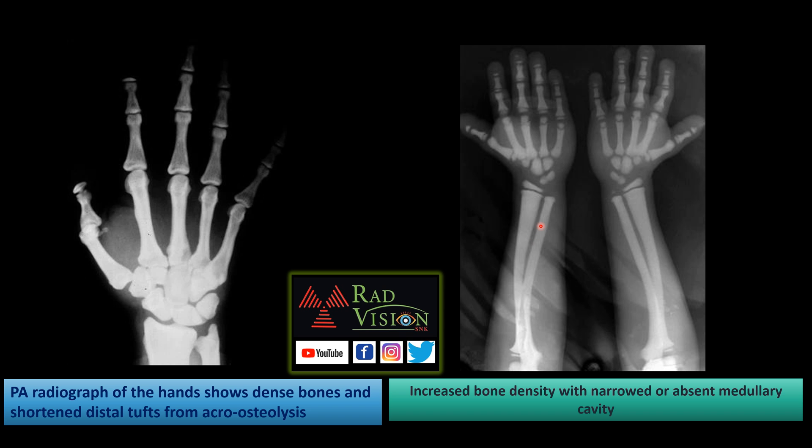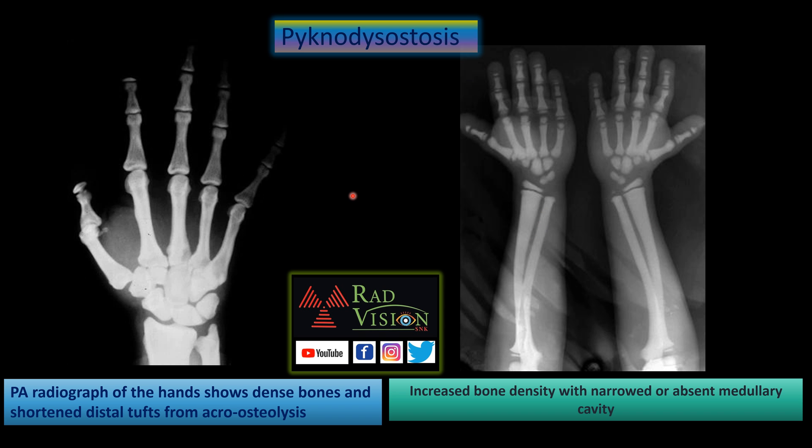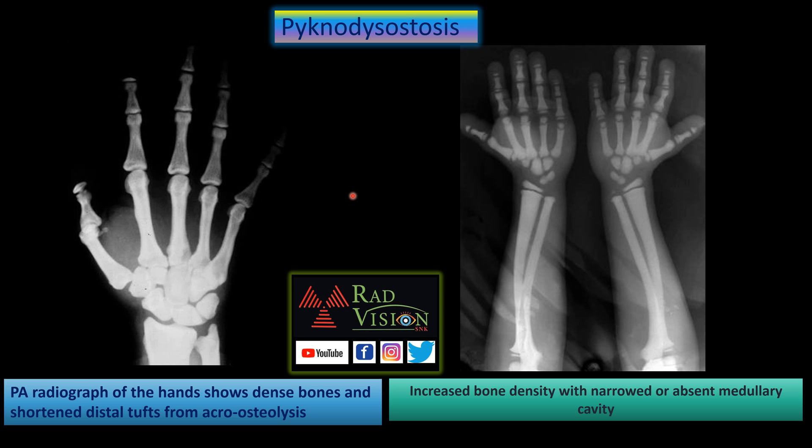There is increased bone density with a narrowed or absent medullary cavity. This is the classical case of pycnodysostosis. We will now look at the differences between osteopetrosis and pycnodysostosis.